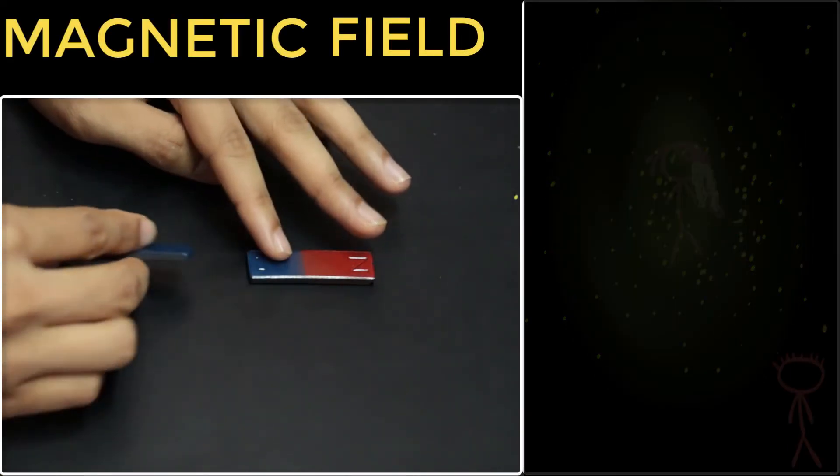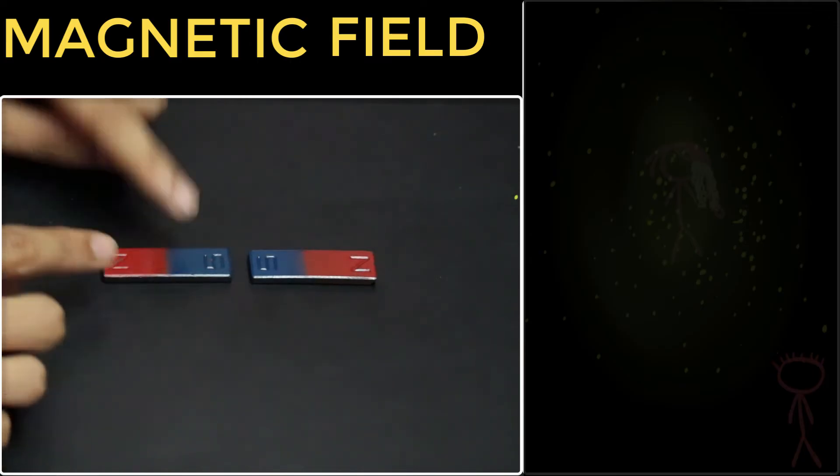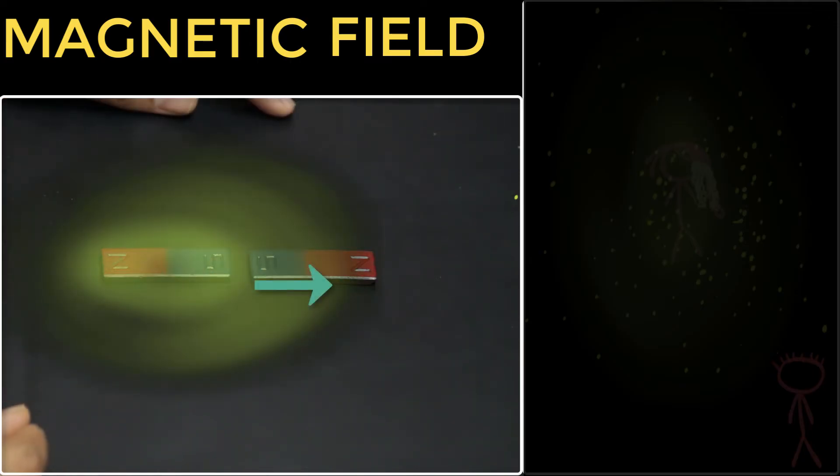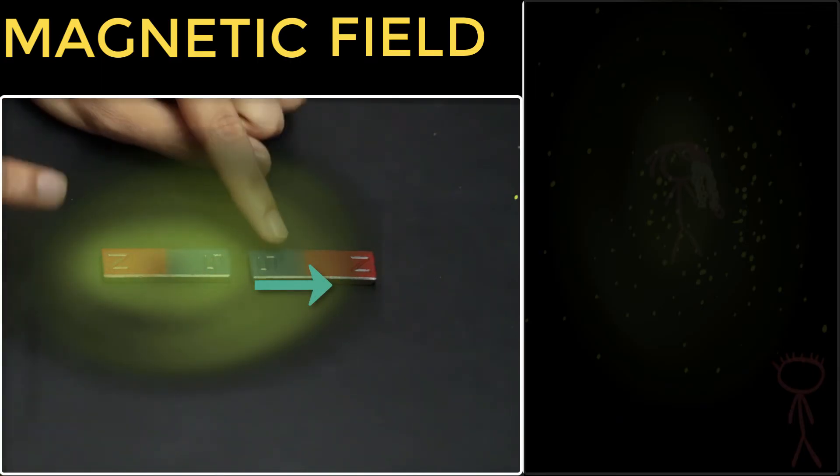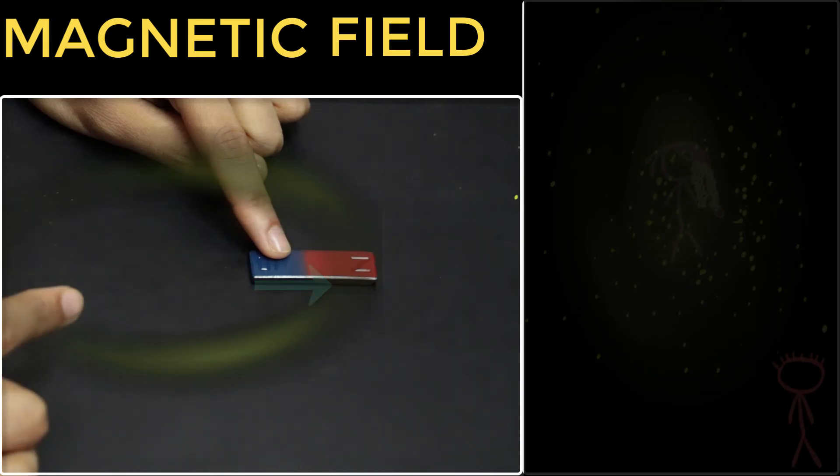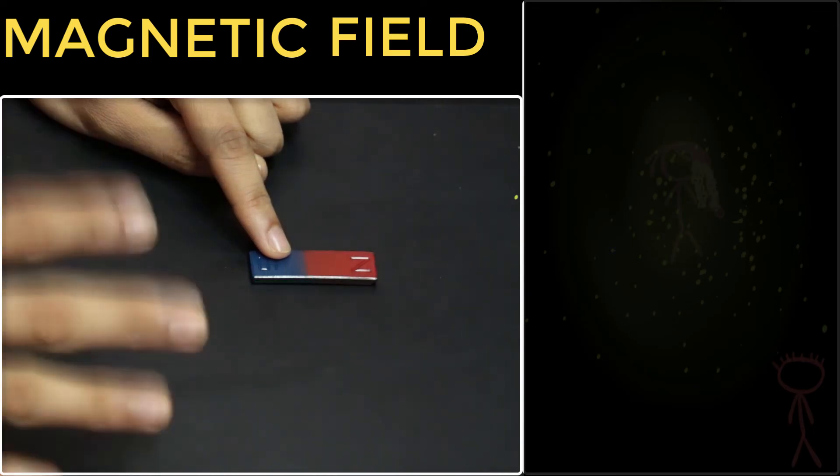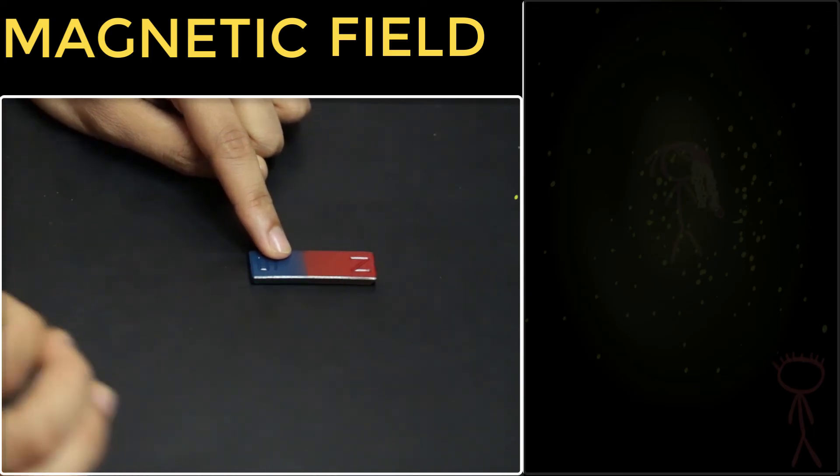Similarly, over here, this magnet is producing its own magnetic field around it. Now, when we make this magnet disappear, its field doesn't instantly disappear. Its field lasts for a very, very small amount of time.